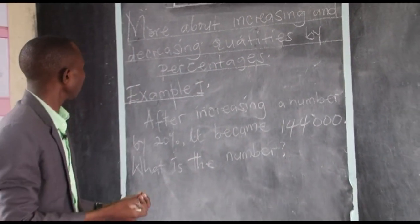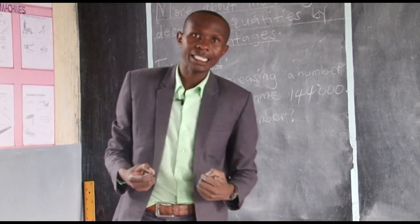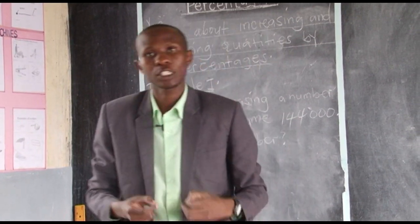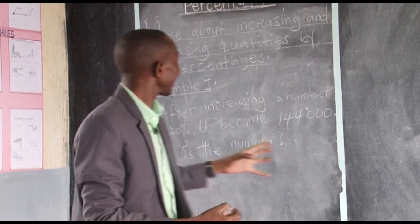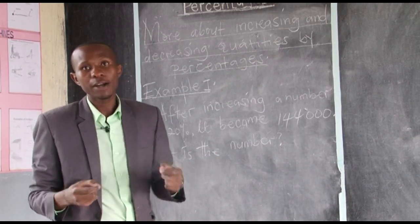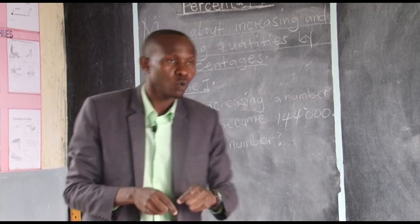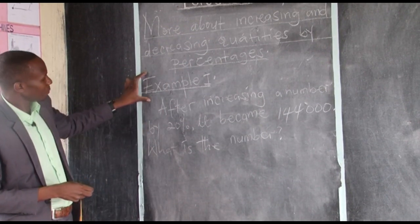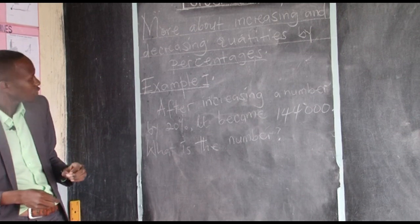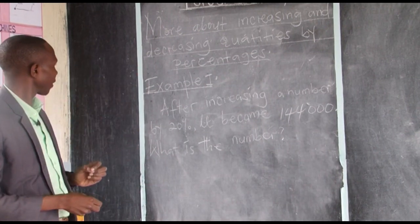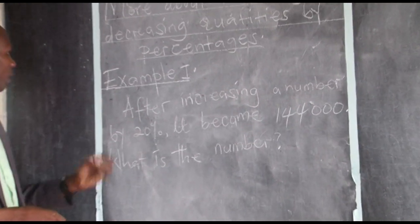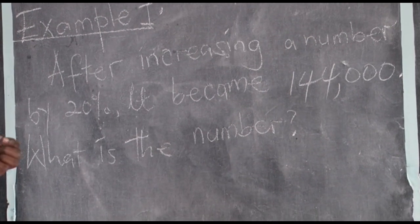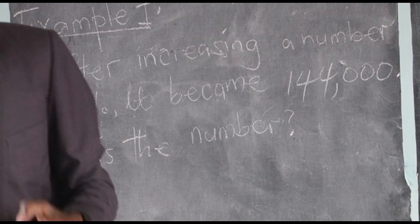Earlier on, we looked at numbers using percentages and how to decrease quantities using percentages. Today we want to look at the relationship between the two — how can we increase and how can we decrease a quantity by percentage. Let's look at example one: after increasing a number by 20%, it became 144,000. What is the number?